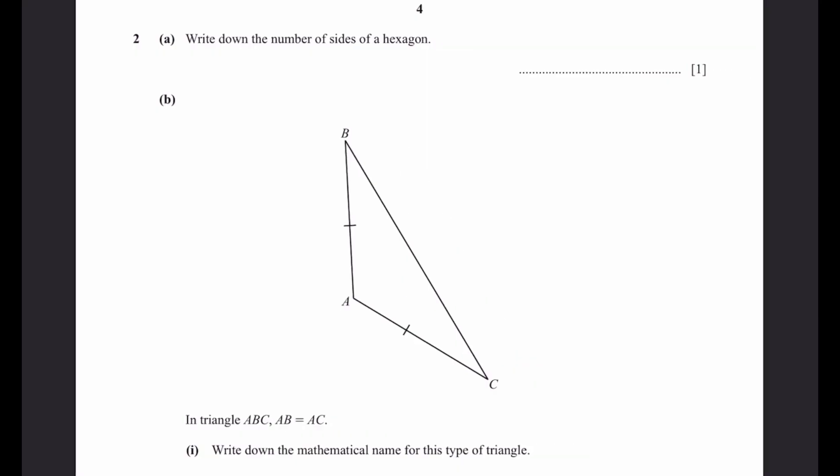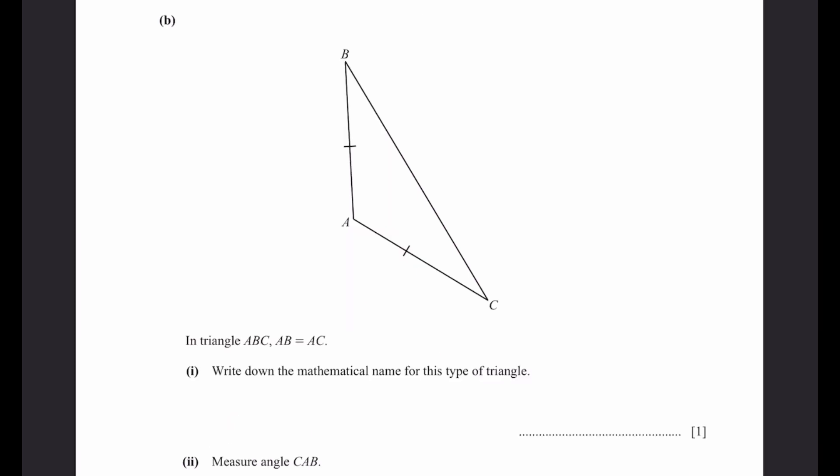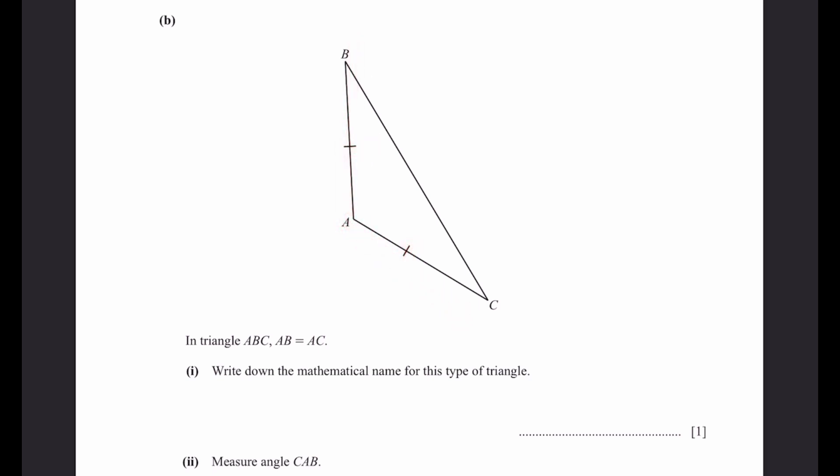Question 2, part A: A hexagon has 6 sides. Part B, question 1: In triangle ABC, AB = AC, so these two sides are equal. Because there are two equal sides, it is an isosceles triangle.